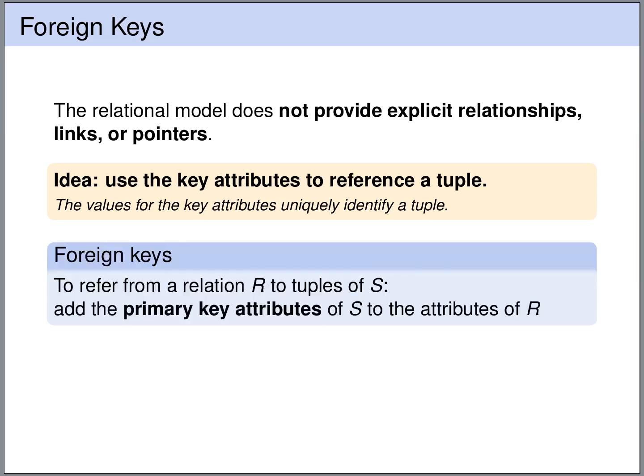So let's say we want to refer from a relation R to the tuples of a relation S. The idea is that we then add the primary key attributes of the relation S to the attributes of the relation R. So we extend the relation R with the primary key attributes of S, and we use these attributes to refer from R to S.